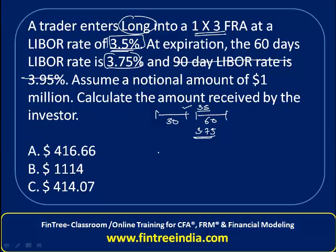This payoff can be calculated in four simple steps, which will ensure that we don't have to use the formula. Step one: we will calculate the profit in percentage terms, which would be 0.25%. Step two: 0.25% of 1,000,000 is 2,500.